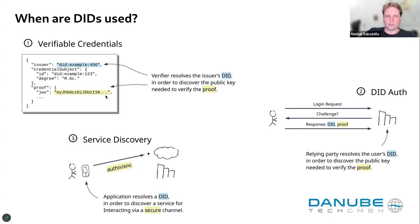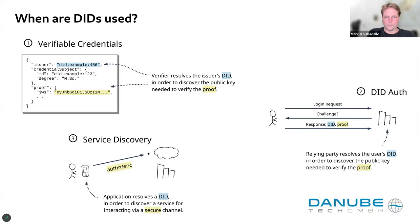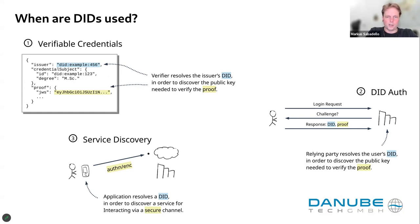A verifiable credential is always issued by someone and contains statements about someone or something. This is where DIDs are used. DIDs by themselves do not carry any personal data — the DID doesn't have a name or date of birth attached. But this kind of information is expressed using verifiable credentials, and the DIDs are the identifiers for the issuer of the credential and for the subject of the credential.